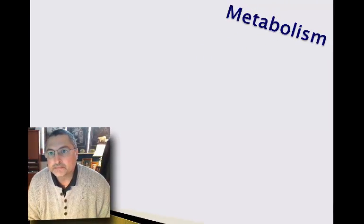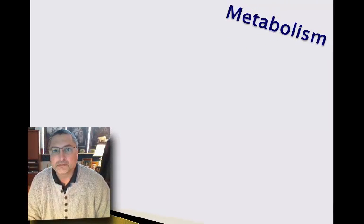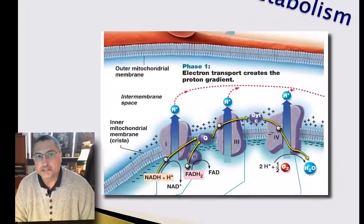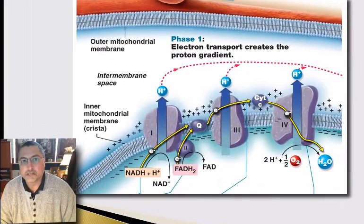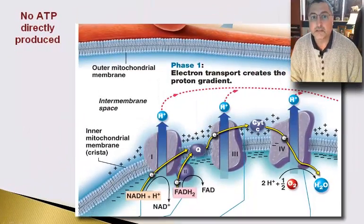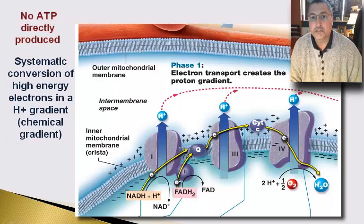Hey guys, welcome back. We're getting really, really close to producing some major league energy here. We just got through looking at the electron transport chain. We saw that no ATP was directly produced, but what happened was a systematic conversion of the potential energy found in high energy electrons into a chemical gradient that can be used to do work.